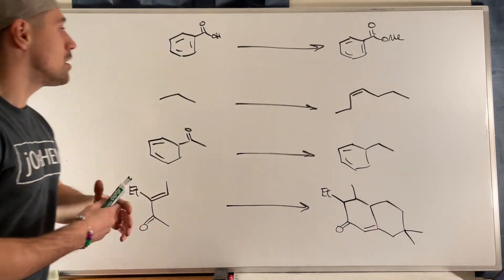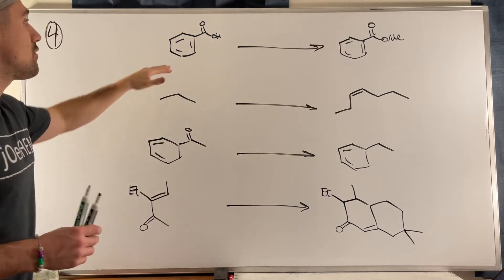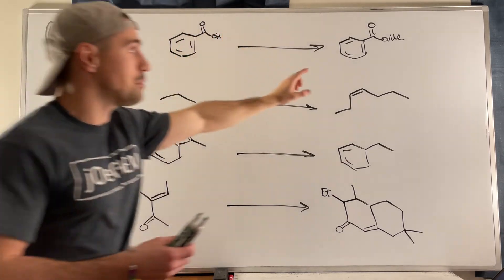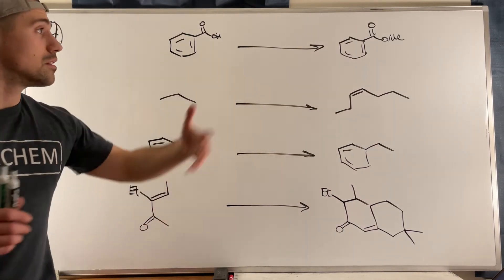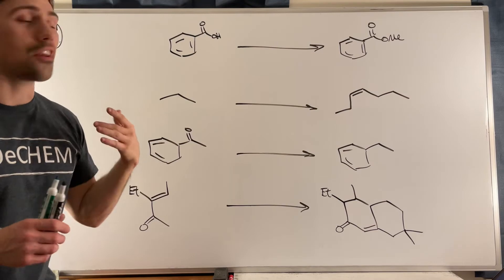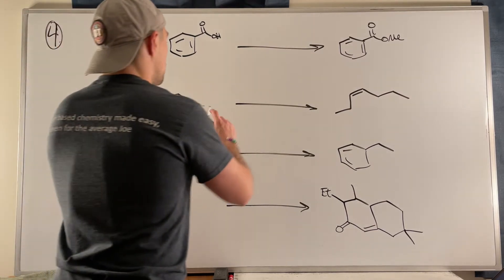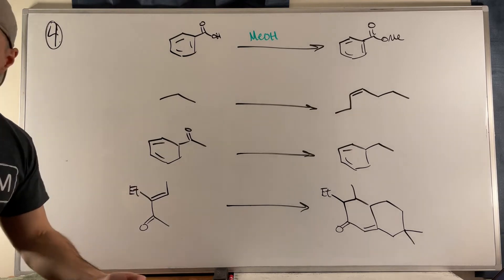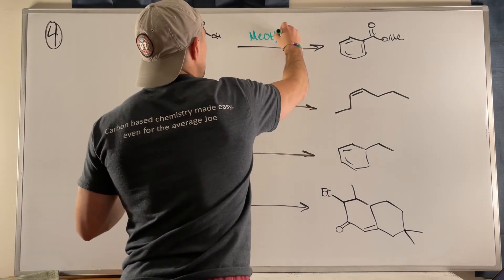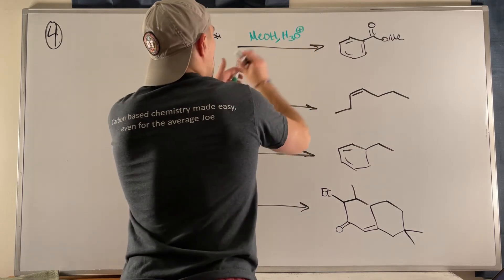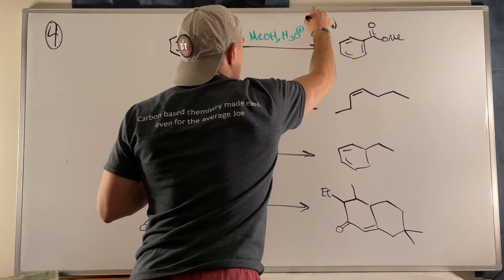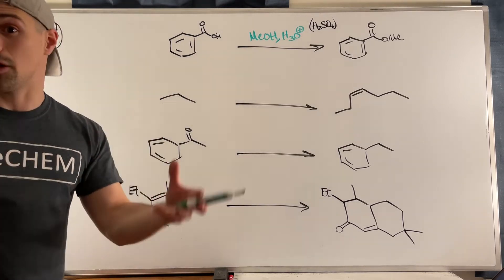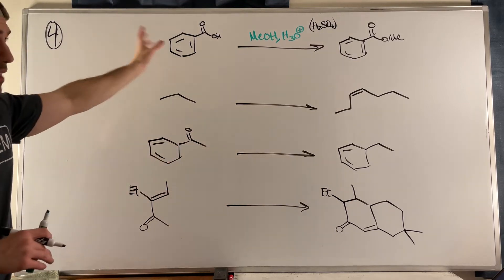Problem four is complete-the-reagent. Up top, we have a carboxylic acid converting to a methyl ester — straightforward ester formation. We need methanol and an acid catalyst. On the answer sheet I used H3O+, but H2SO4 works equally well as long as it's a non-nucleophilic acid — HCl would be problematic because it produces Cl minus which is nucleophilic.